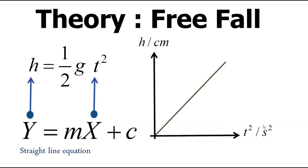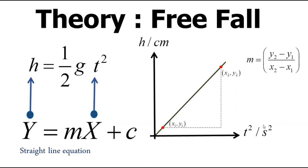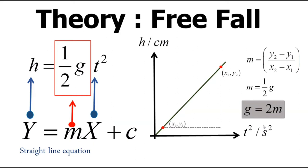Plotting h against t² will give us a straight line graph. If we choose two points along the line and draw a right-angled triangle connecting the two points, we can calculate the gradient using (y2 - y1) / (x2 - x1). The gradient of the graph equals ½g. Rearranging, we get g equals two times the gradient of the graph. Make sure you convert your final answer to SI units.